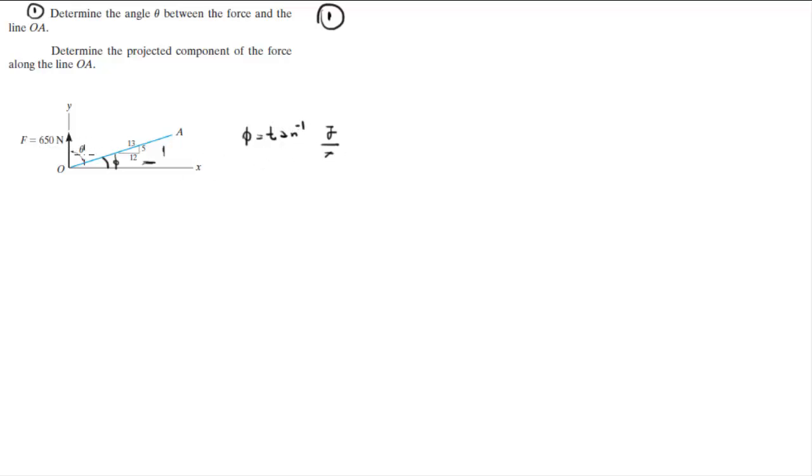So if you wanted to find this angle, all you have to do is the tangent inverse of the x over the y. The x being 12 and the y being 5. So tangent inverse of 12 over 5 gives you theta which comes out to be 67.4 degrees.